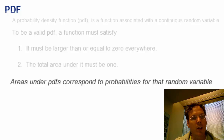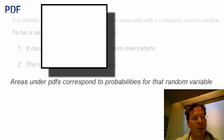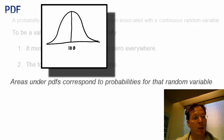For example, if intelligence quotients are normally distributed with a mean of 100 and a standard deviation of 15, that implies the population follows a specific bell-shaped curve. The probability that a person drawn from that population has an IQ between 100 and 115 is the area under that curve between those two values.